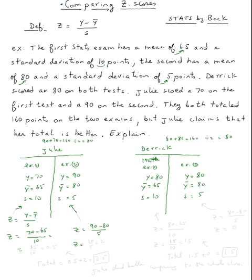For exam one, for Derek, z is equal 80 minus 65 over 10. And then for exam two, z is equal 80 minus 80 over 5. This is easy, this is just going to be zero. Now for this one, this will be 15 over 10, which is 1.5.